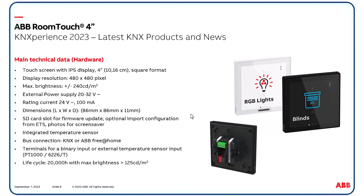Let's have a look at the main technical data of the ABB Room Touch 4-inch. It has a touch screen with IPS display, 4-inch square format. The display resolution is 480×480 pixels with up to 240 candela per square meter. It needs an external power supply between 20 and 30 volt DC and 100 milliampere, typically 24 volt. The integrated SD card slot is for firmware update, optional configuration import from ETS, or photos for the screen saver function. An integrated temperature sensor exists and is needed for room temperature control. It's a KNX device, but alternatively it can be linked to our separate home automation system ABB Free at Home as well. Additional terminals for a binary input or external PT1000 temperature sensor input are also available.